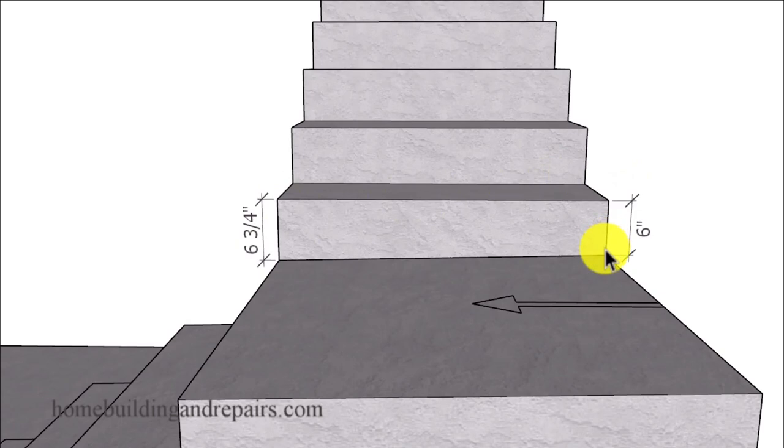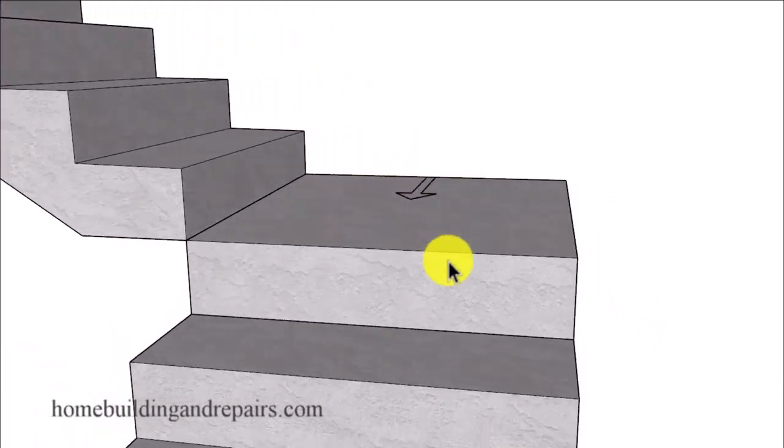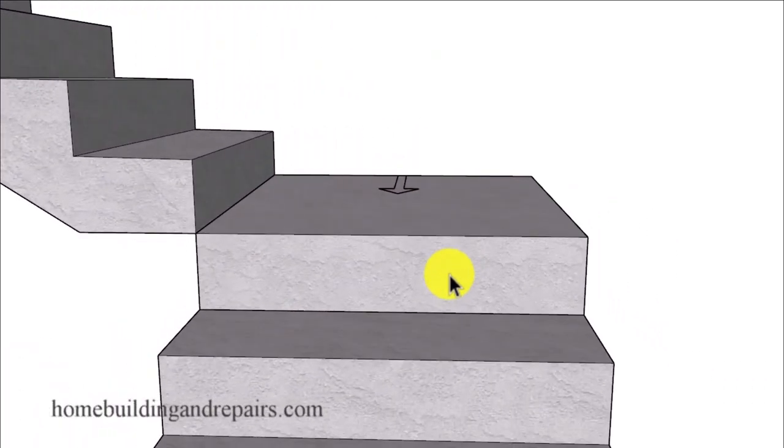It will not be the same height. And the building codes actually allow for this, which of course could create problems for other building codes that suggest that you can't have more than a 3/8 inch variation in the risers.